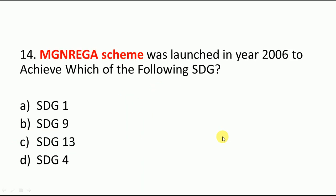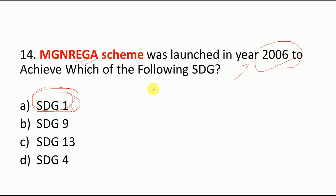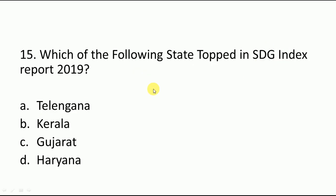MGNREGA — Mahatma Gandhi National Rural Employment Guarantee Act — was launched in 2006 to achieve which of the following SDGs? This is a good question. If you know the SDGs carefully, the options will make it clear. SDG 1 is No Poverty — the basic objective of MGNREGA is to provide jobs to laborers. So MGNREGA was launched in 2006 to achieve SDG number 1, No Poverty. Remember this.